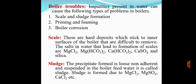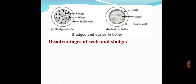Sludge is a precipitate that is loose, non-adherent, and suspended in the boiler feed water. Once sludge is formed, it gets collected at the cooler regions of the boiler and does not adhere firmly to the walls of the boiler metal. Sludge is usually formed due to magnesium chloride, magnesium sulfate, calcium chloride, etc. Here I have shown the figure of scale and sludge — sludge is a loose precipitate whereas scale adheres to the inner surfaces of the boiler.